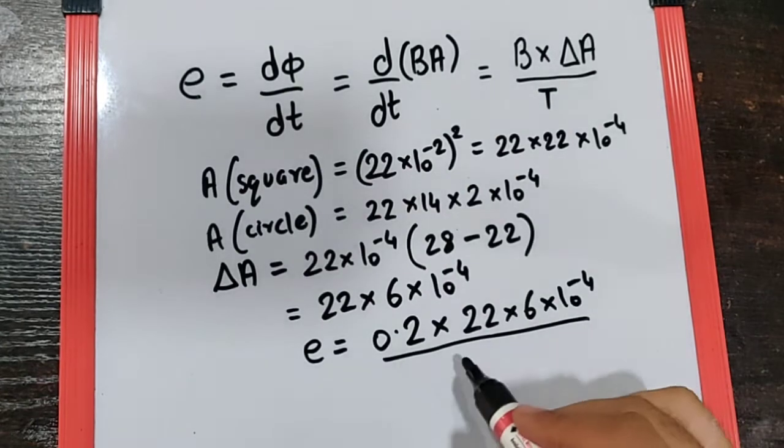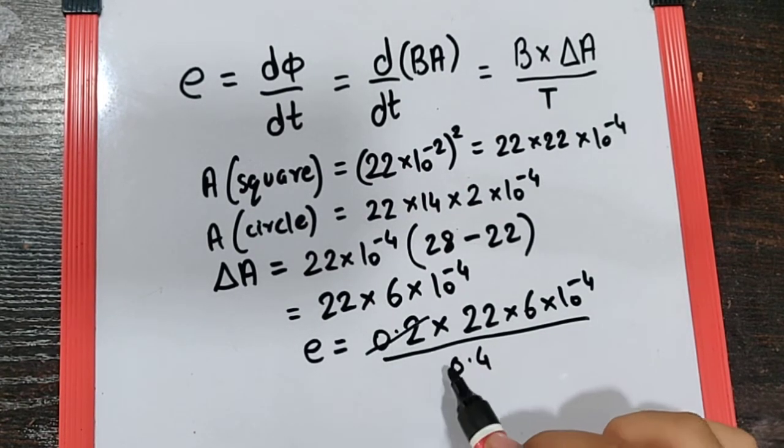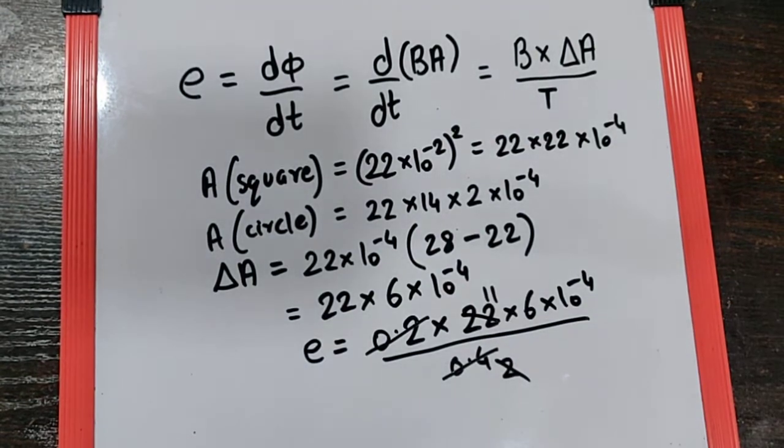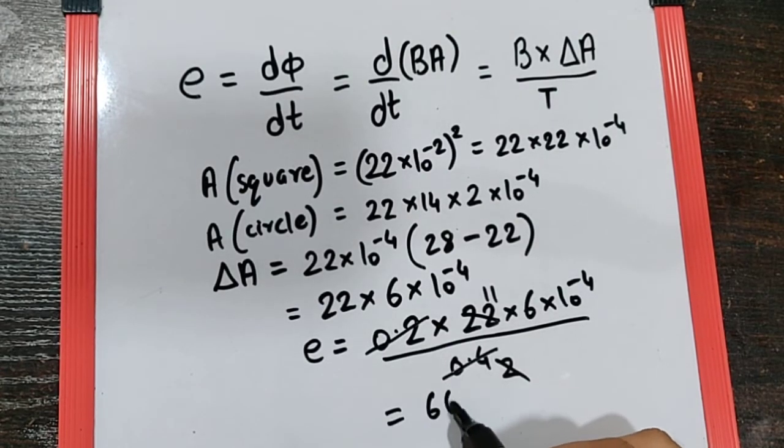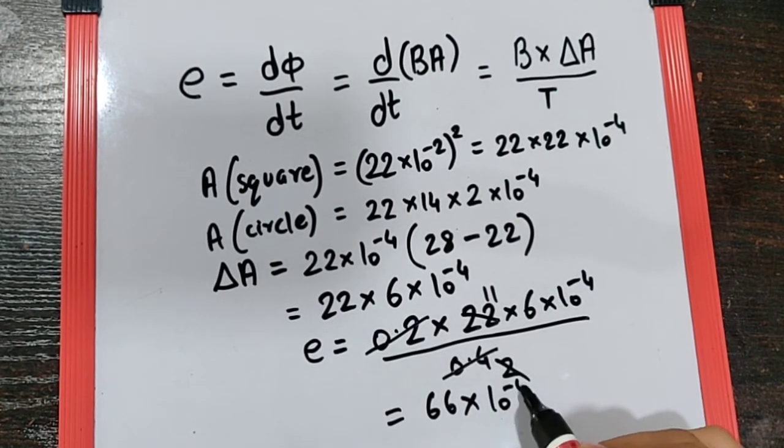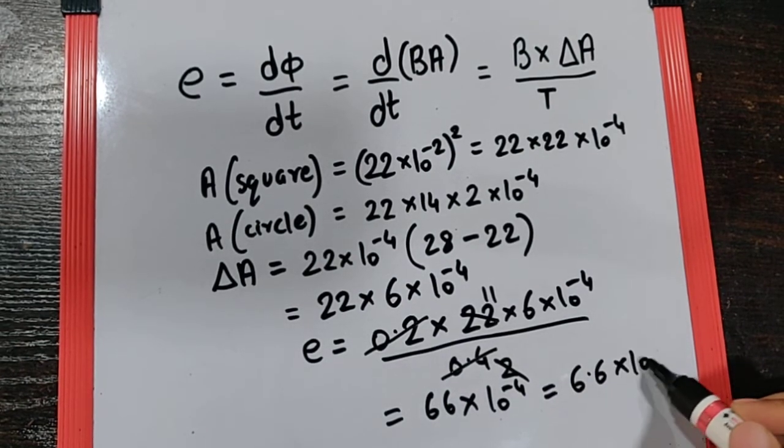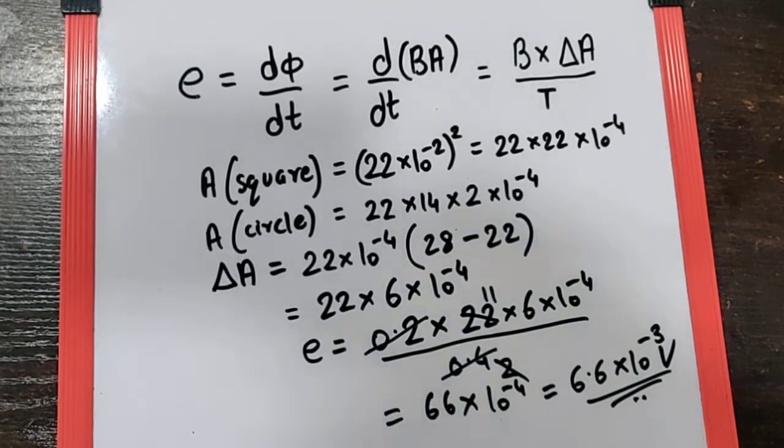So when we cancel this we get this as 2, when canceling this we get this as 11. So basically we get the value as 66 into 10 raise to minus 4 which is equivalent to 6.6 into 10 raise to minus 3 volt, and that is the final answer.